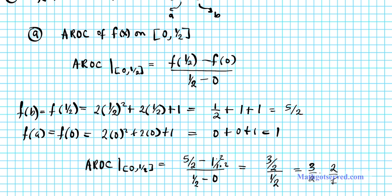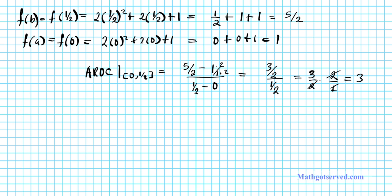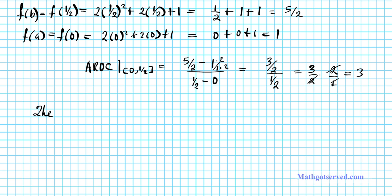And then the 2's divide out, and your final answer is 3. So let's write down what our answer is. The average rate of change of f on 0 and 1 half is equal to 3.